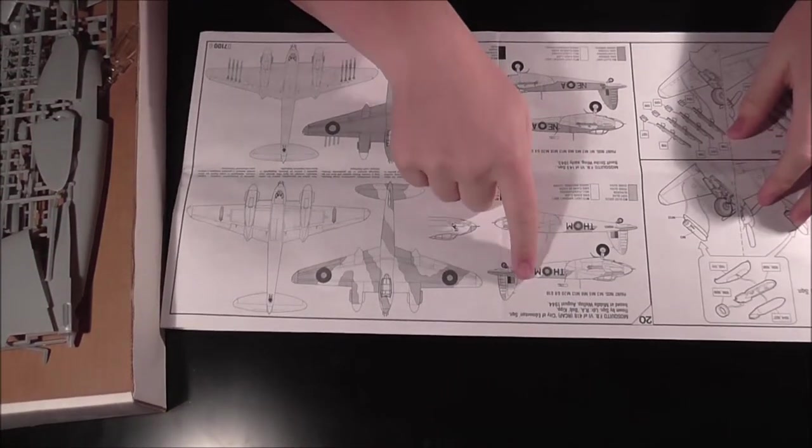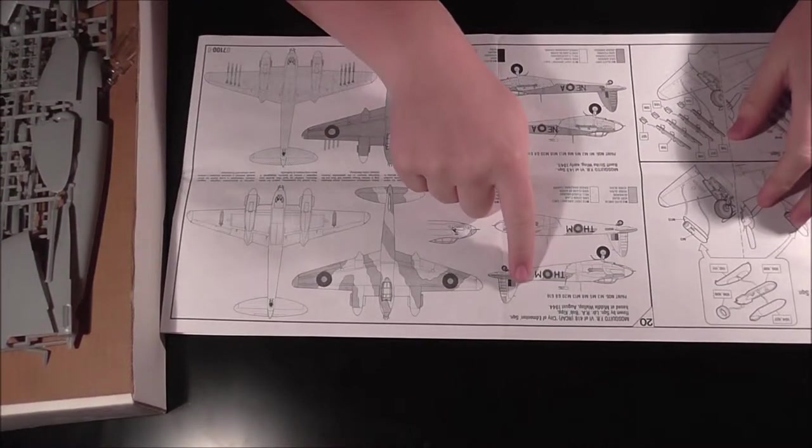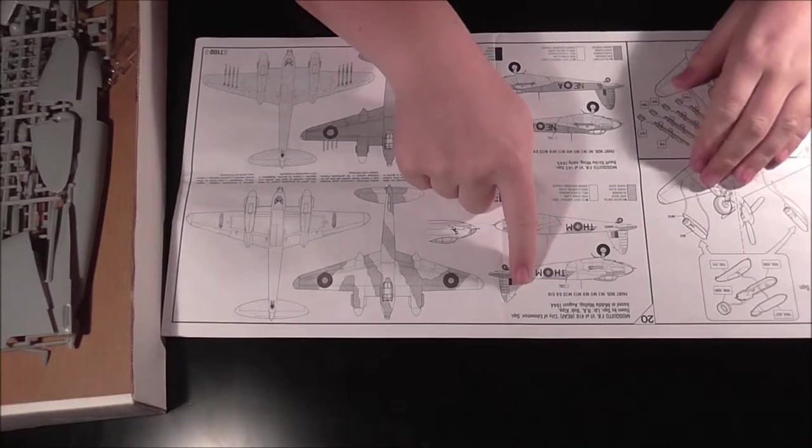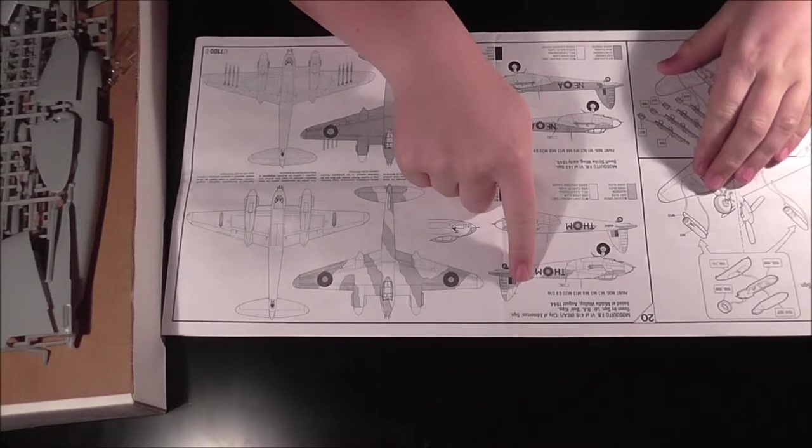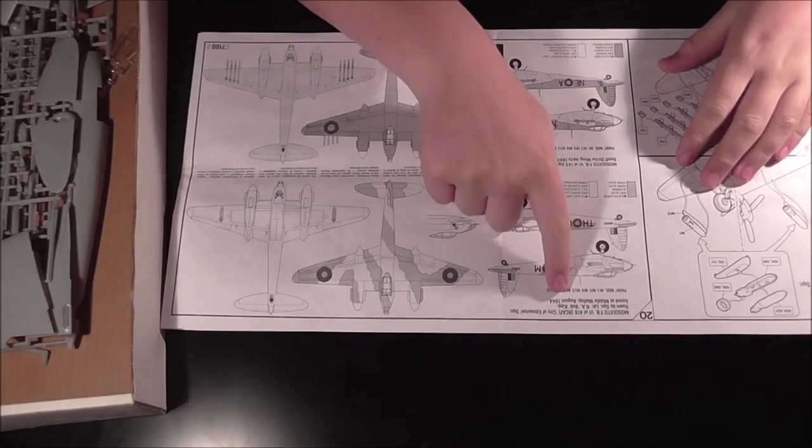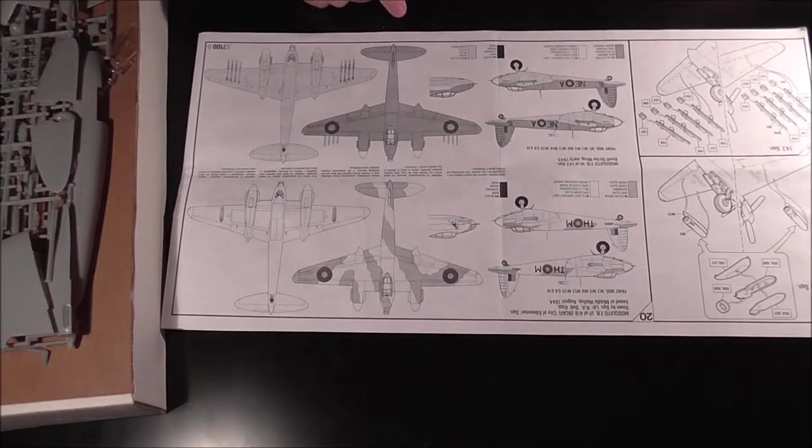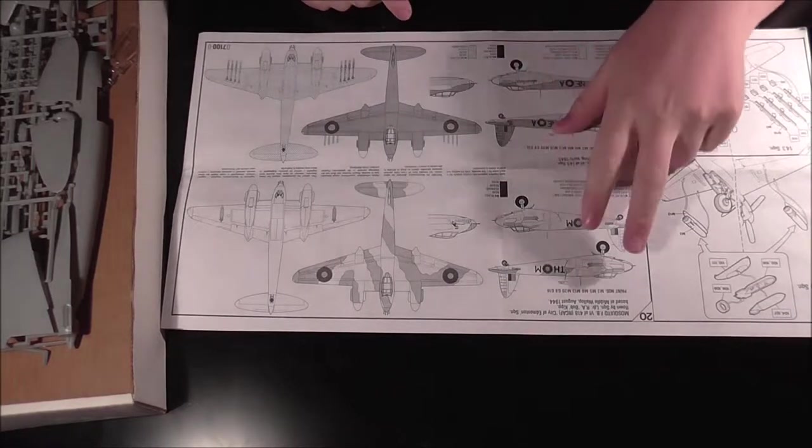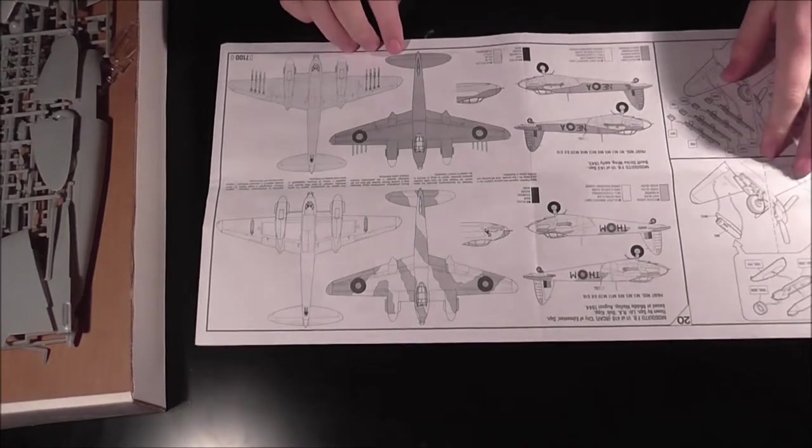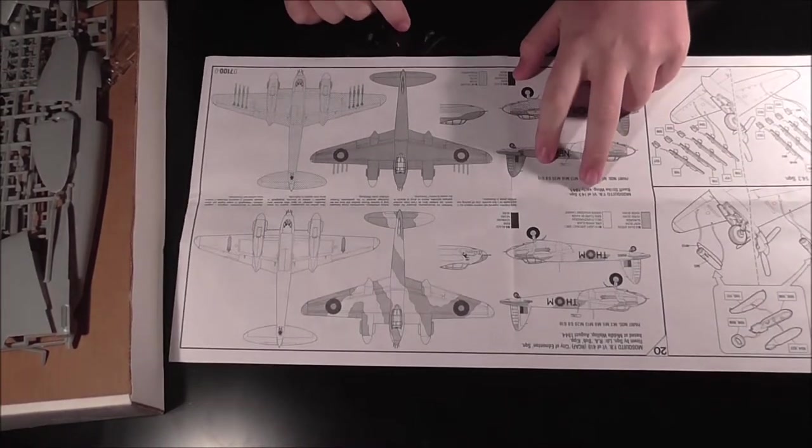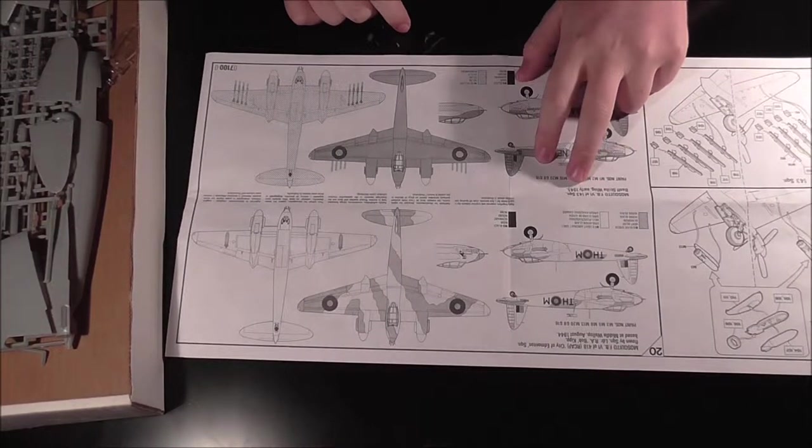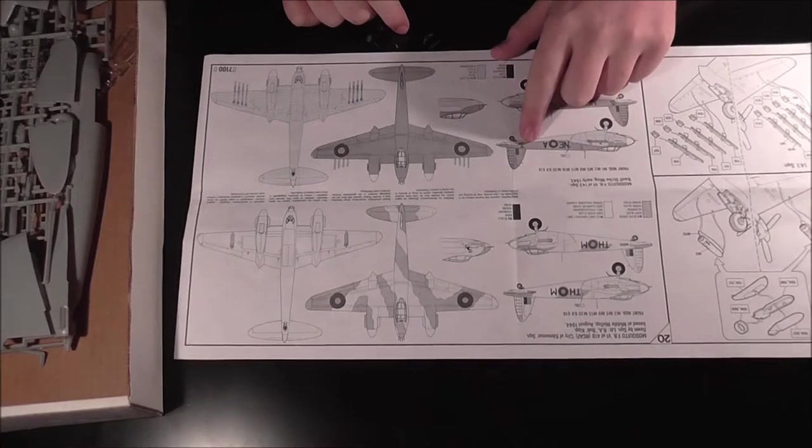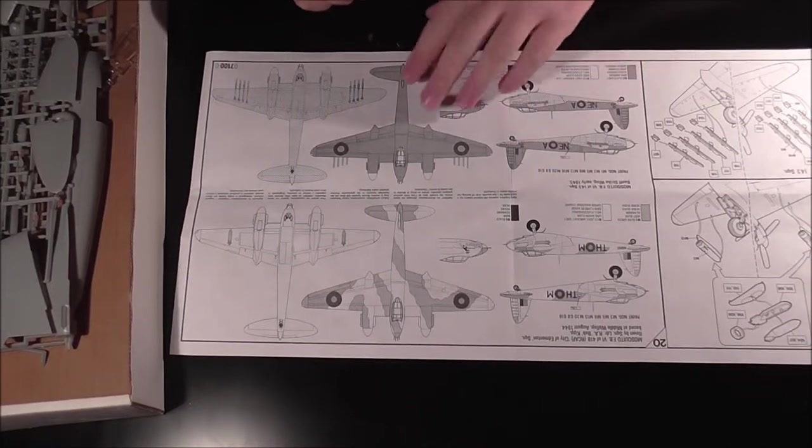The last one to do is number twenty. Which, you'll have to fold it all the way out. So, we have option A with the proper camo. Or option B with the non-proper camo. Option A is, let me just check. 418 City of Edinburgh Squadron. Flown by squadron leader R.A. Bob Kipp in 1944. Based at Middle Wallop.